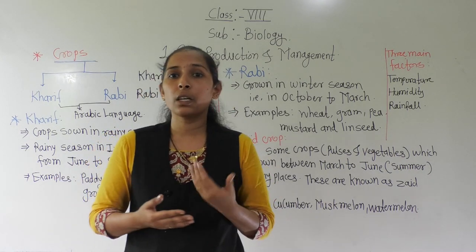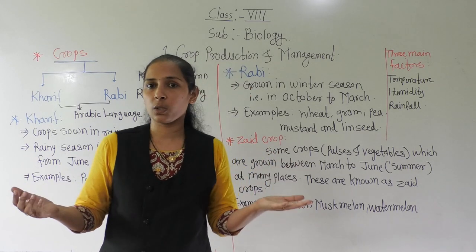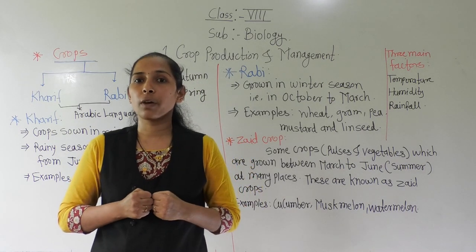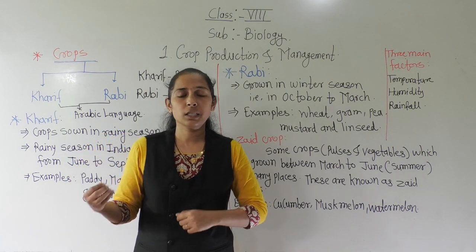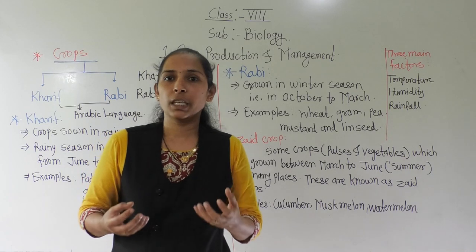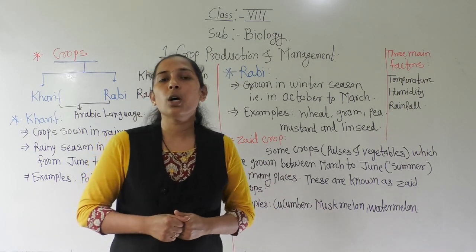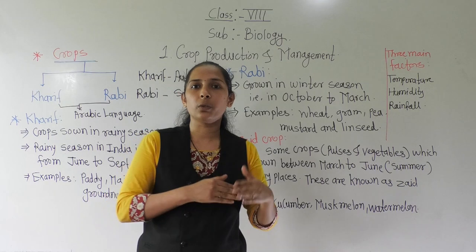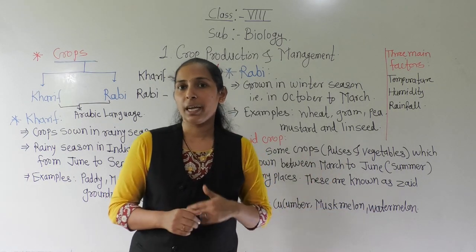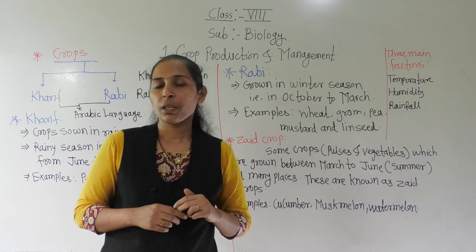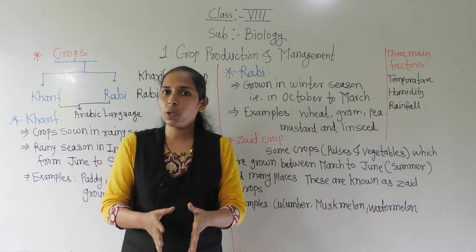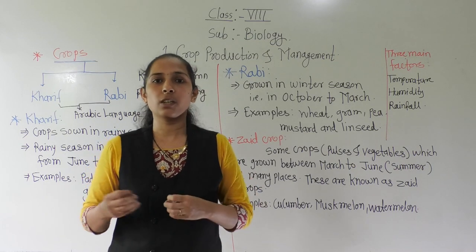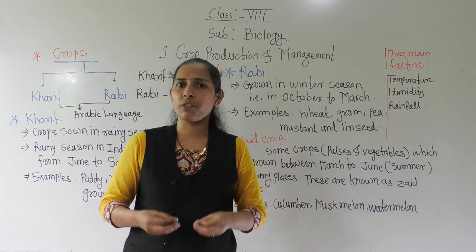We have different types of crops according to the seasons. Why do we have different types of crops? Why are we not taking the same crops throughout the year? Because India is a very big and beautiful country, and if we talk about the climatic conditions of India, we have different climatic conditions according to different regions. For example, in the northern region, in winter there is an extremely cold climatic condition — the temperature goes up to 0 degrees Celsius or minus 5, minus 4, etc.